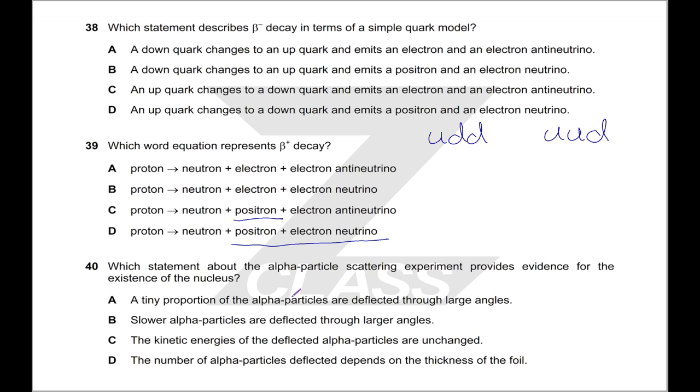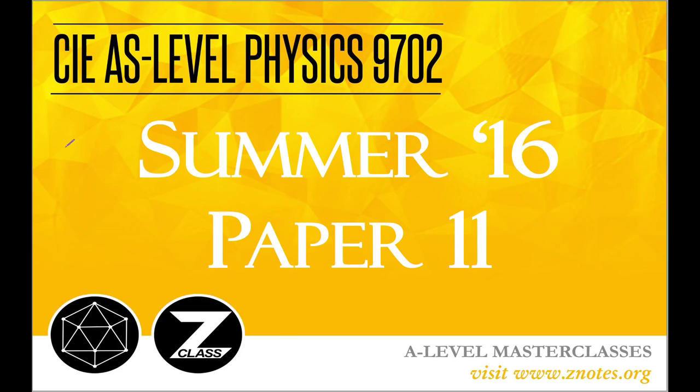Last question. Which statement about the alpha particle scattering experiment provides evidence for the existence of the nucleus? This is just learning. The idea that the main one is a tiny proportion of the alpha particles are deflected through large angles. Tiny proportion meaning that we have a small, dense nucleus. That's the key idea. So it's this one. Okay cool, so that has been the physics paper. Hopefully this was helpful to you. And I will see you next time. Goodbye.